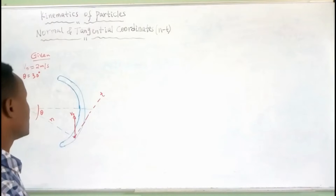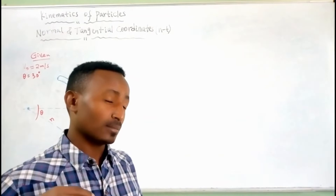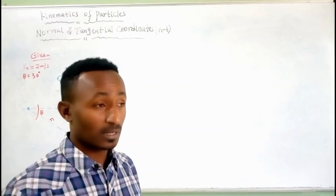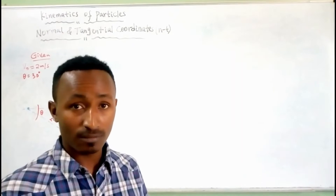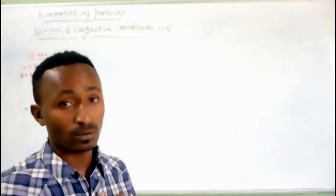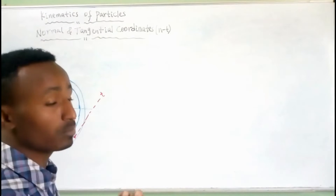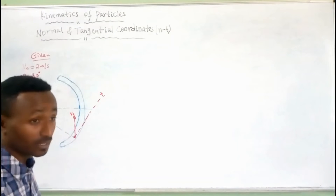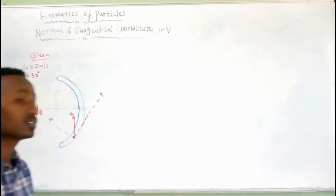So, the normal-tangential coordinate line is the velocity. The normal-tangential velocity — we do not have normal velocity. For example, we have a tangential velocity, which is the normal acceleration and the normal-tangential acceleration.